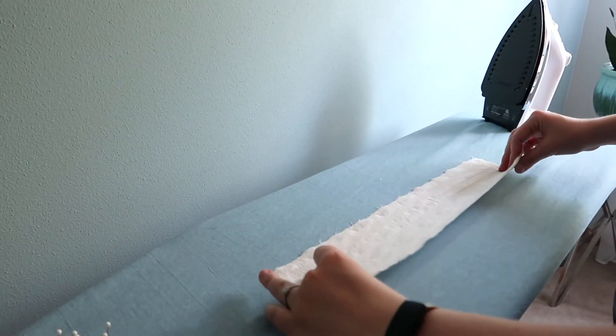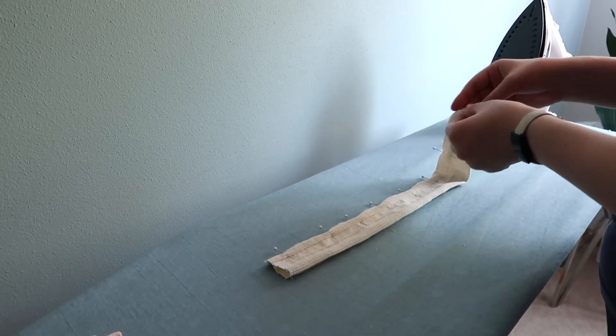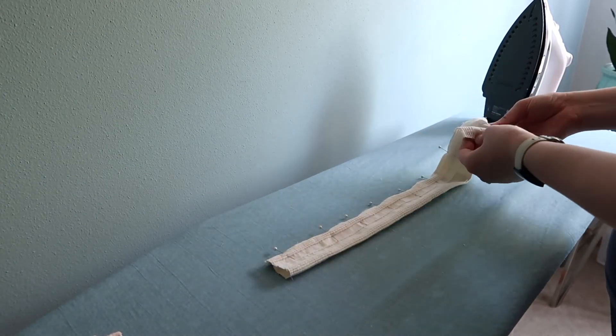Take your scrunchie piece and fold it in half right sides together and pin up the long edge. On one of the short edges, fold it over about half an inch and pin this as well.